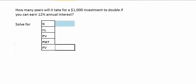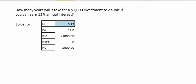We might want to know how long it would take for an investment to grow a certain amount. How many years will it take for a $1,000 investment to double if we can earn a 12% annual interest rate? Using our financial calculator: for the investment to double we want a future value of $2,000. We enter $2,000 for future value, zero for payment, $1,000 for present value — note one must be positive and one negative to reflect cash inflow versus outflow — and 12 for the interest rate. Solving for the number of periods, we see it would take 6.12 years.